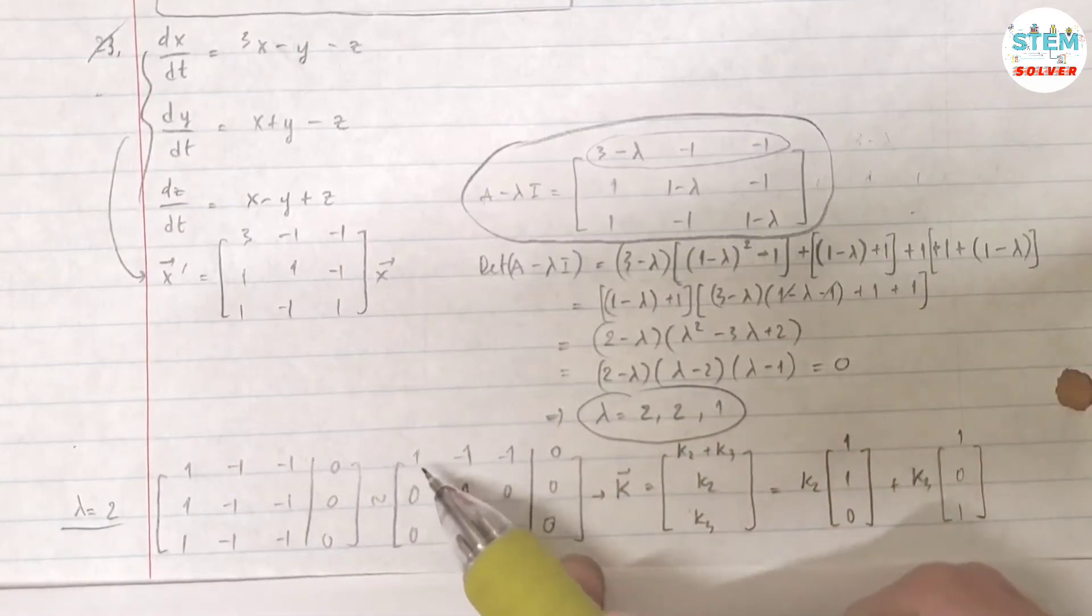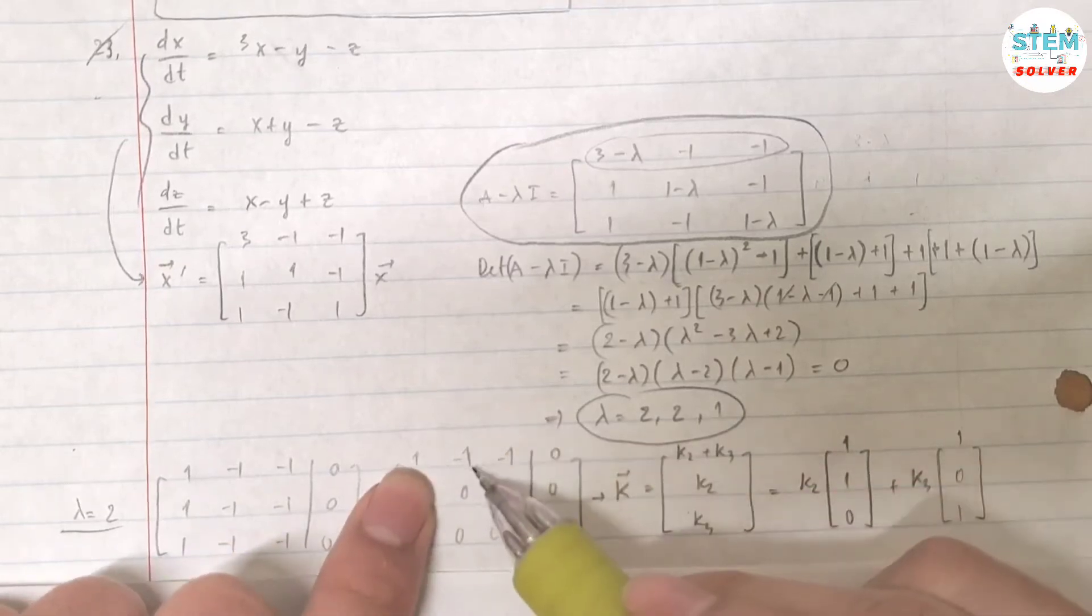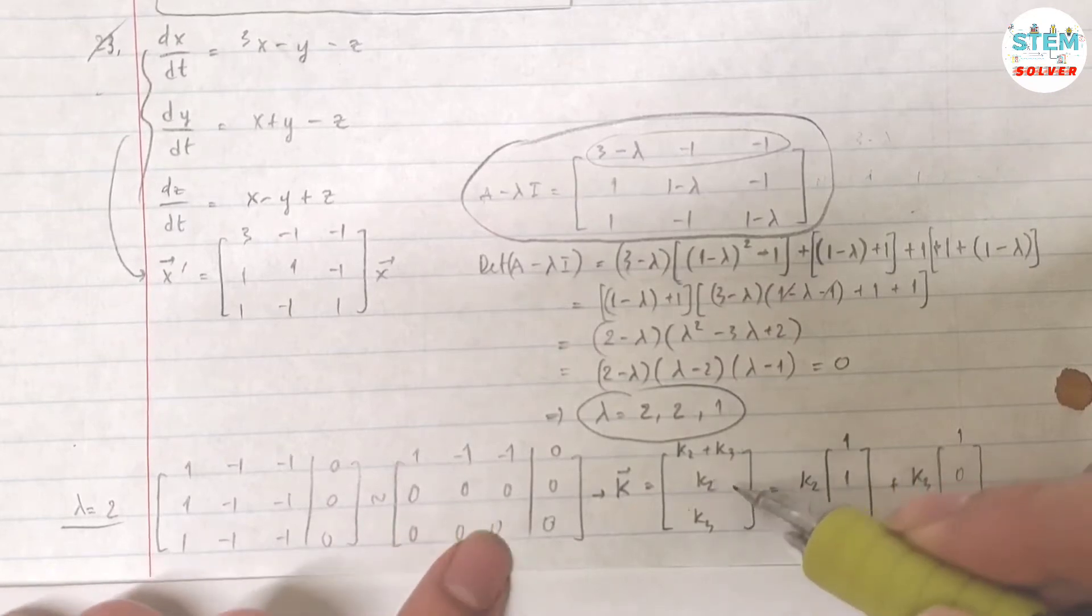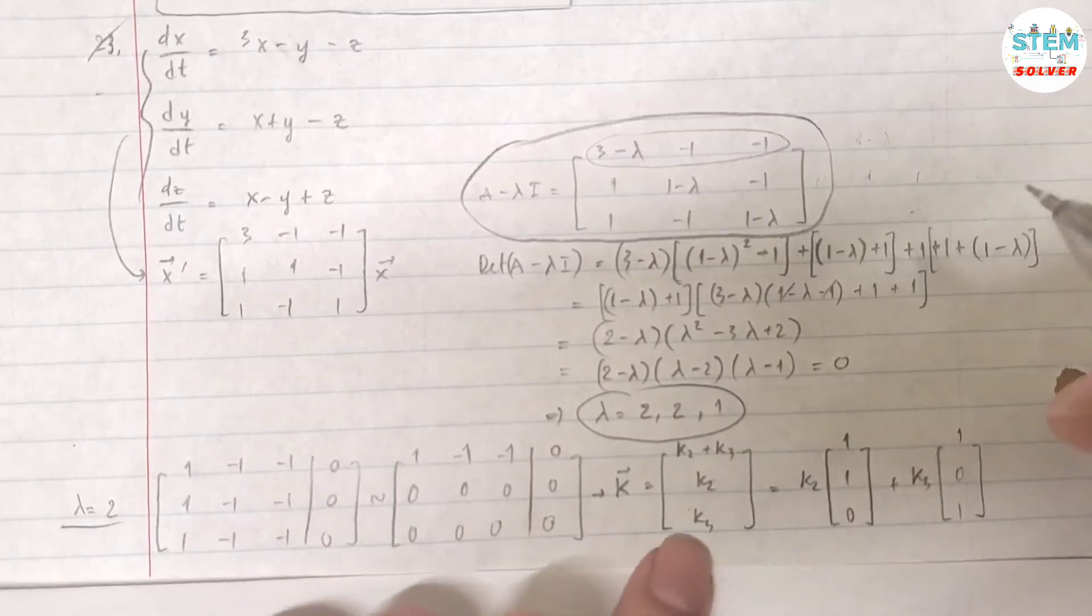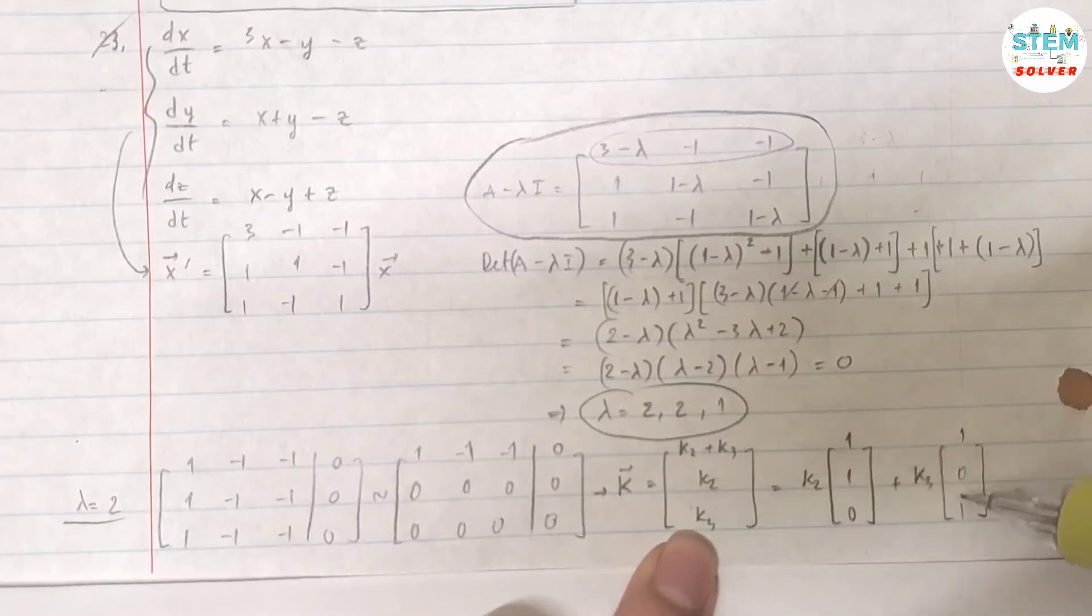So for k1, if I solve this equation I have k1 equals k2 plus k3, which is this. For k2 it's everything, k3 is everything. Now from this vector I can break it down into vector k2 and vector k3.